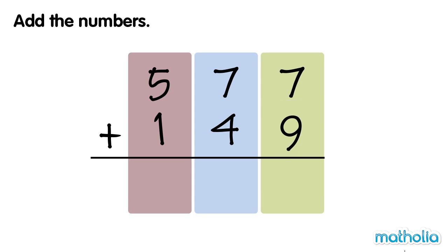We can regroup 16 ones into 6 ones and 1 ten. 1 ten plus 7 tens plus 4 tens equals 12 tens.